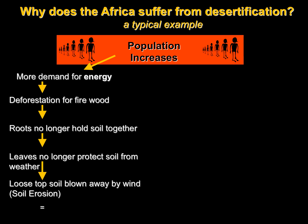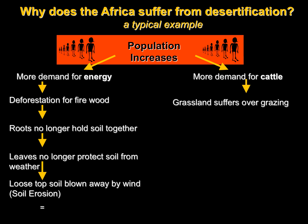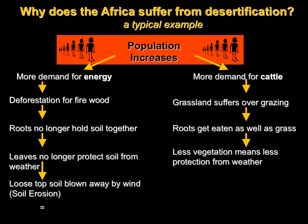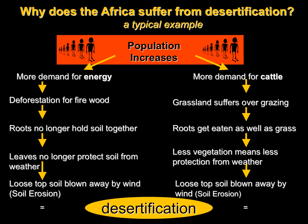You also have increasing demand for food when you have an increase in population. For this example, let's say that demand is for cattle. With more demand for cattle, you're going to see more overgrazing in your grassland areas. The roots get eaten — not just the leaves of the grass — because you have too much cattle on too small a piece of land. When those roots go away, less vegetation means less protection for the soil from the weather, and your loose topsoil can be blown or washed away. In both of these cases, these different things lead to desertification.